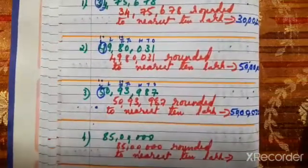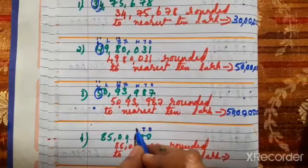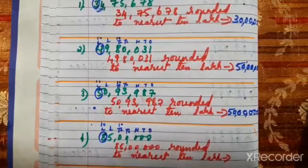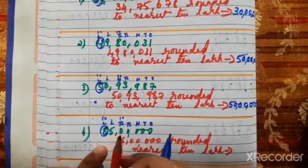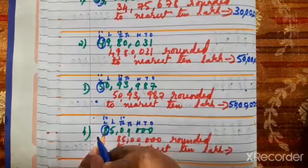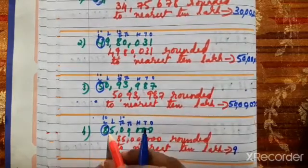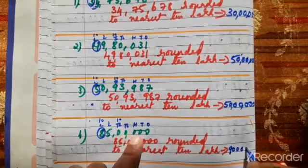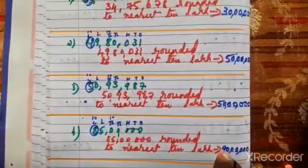Now 4th question: 85,00,000. We have to round off the number. First step, check the place value: ones, tens, hundreds, thousands, ten-thousands, lakhs, and 10 lakhs — 8 is in the 10 lakhs place. Knock the door and ask: do you have 5 rupees or more than 5? The neighbor is 5, so 5 can help. 1 is added — 8 becomes 9. Once the door is knocked, 5 becomes 0 and all other digits become 0. So 85,00,000 rounded to nearest 10 lakh is 90 lakhs.